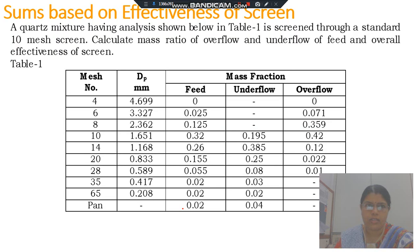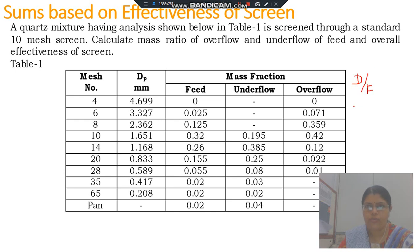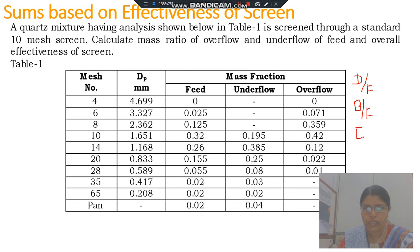The first problem is: a mixture having the analysis shown below is screened through a standard 10 mesh screen. Calculate the mass ratio of overflow and underflow to the feed, and the overall effectiveness of the screen. So we are supposed to find out D by F, that is underflow to feed, and the overall effectiveness of the screen.